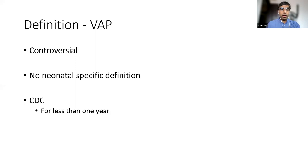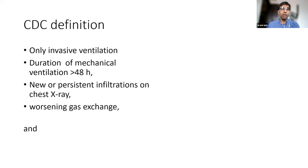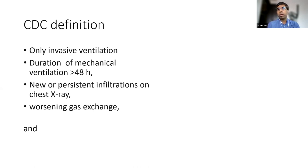The old CDC definition broadly states that for less than one year, this VAP definition is basically for invasive ventilation only. We don't have a separate definition for non-invasive ventilation. The basic definition is a baby has to be ventilated for at least 48 hours, and subsequently if a baby develops a new infiltrate on the chest X-ray, or infiltrates which are not improving — for example if you ventilate the baby for RDS and expect improvement by 48 hours — if these things are not clearing.